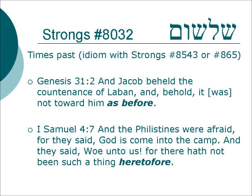Genesis 31:2 — And Jacob beheld the countenance of Laban, and behold it was not toward him as before. 1 Samuel 4:7 — And the Philistines were afraid, for they said, 'God has come into the camp,' and they said, 'Woe unto us, for there hath not been such a thing heretofore in times past.'